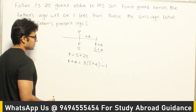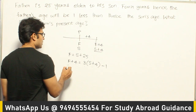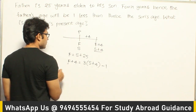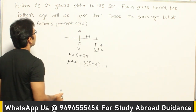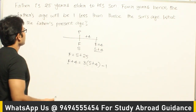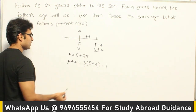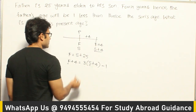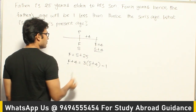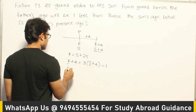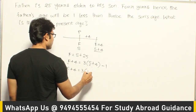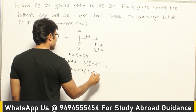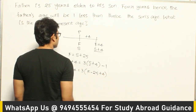Now we can find out the age of the son. In place of F, if you substitute S plus 25, you will get it. Or since the father's present age is asked, you can directly substitute in place of S the value F minus 25. So F plus 4 equals 3 times (F minus 25) plus 4 minus 1.